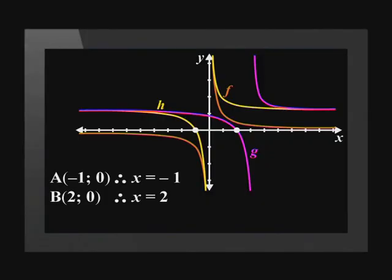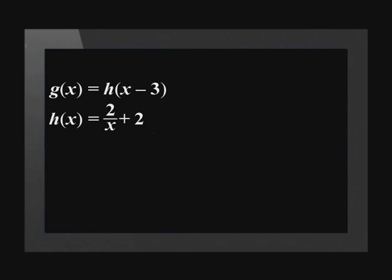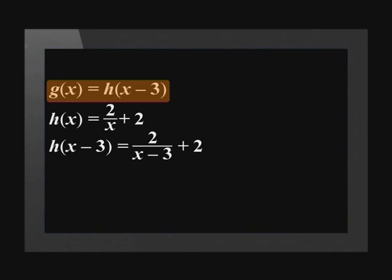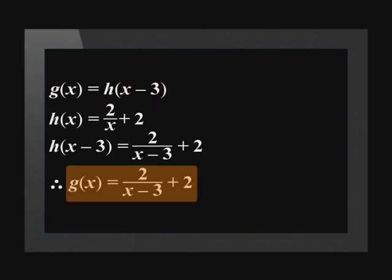This means that the equation of g(x) is equal to h(x - 3), because there is a difference of 3 between -1 and 2. To determine the equation of g(x), we substitute to get h(x - 3) = 2/(x - 3) + 2. g(x) is equal to h(x - 3), which means we can say that g(x) = 2/(x - 3) + 2.